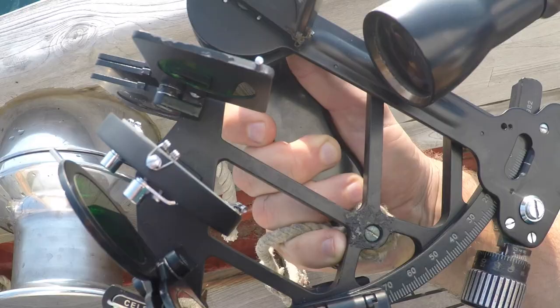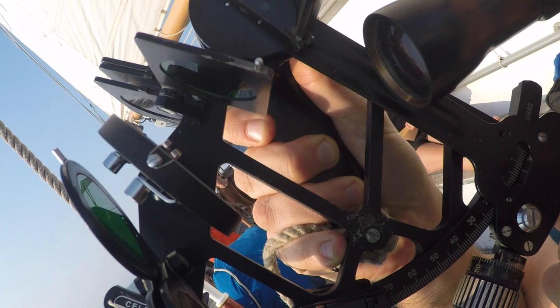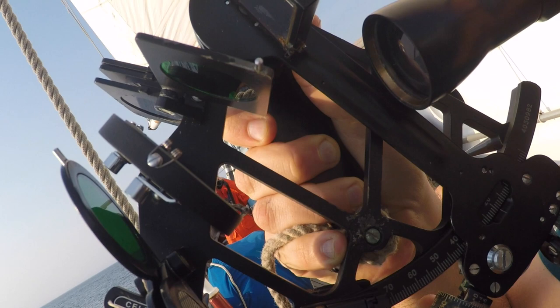The sextant sight itself is completed as normal. You look through the telescope if you've got one at the body, you bring it down to the horizon until it is just touching the horizon and you rock it back and forth to make sure that you've got it exactly correct.